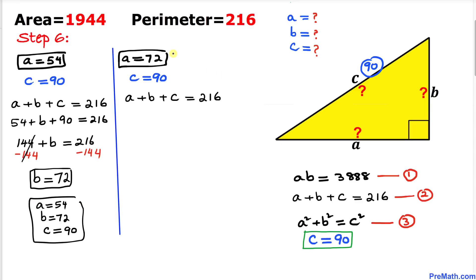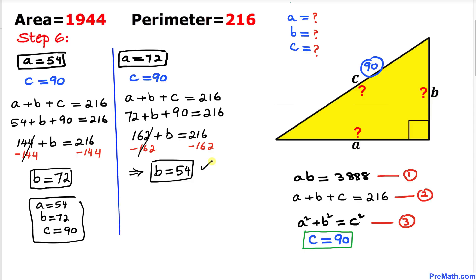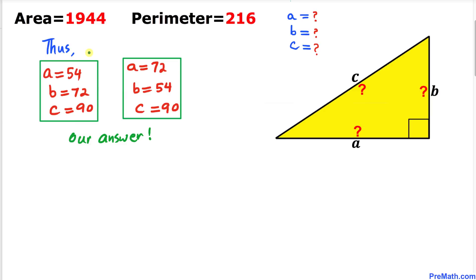Now let's focus on the other value of a, which is 72, with c equals 90. Plugging into equation two: 72 plus b plus 90 equals 216, we find b equals 54. So in this case, a equals 72, b equals 54, and c equals 90. These are our two sets of values for a, b, and c. Thanks for watching, and please don't forget to subscribe to my channel for more exciting videos. Bye!